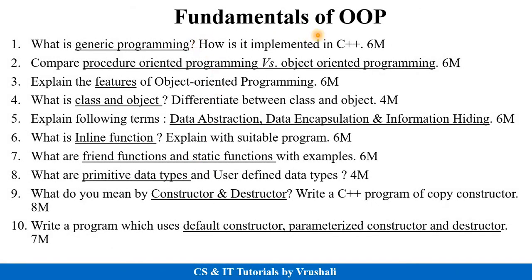The first topic is fundamentals of OOP. The first question is: what is generic programming? How is it implemented in C++ for 6 marks? You have to explain the generic programming concept with example. Next, compare procedure-oriented programming versus object-oriented programming for 6 marks — mention 6 to 7 differences with example. Next, explain features of object-oriented programming for 4 to 6 marks. What is class and object, and the difference between class and object for 4 marks? First define class and object, then mention their differences with a minimum of 5 to 6 points with example.